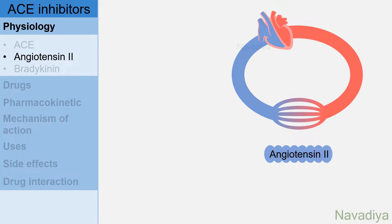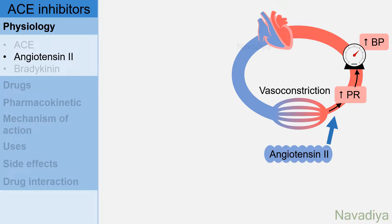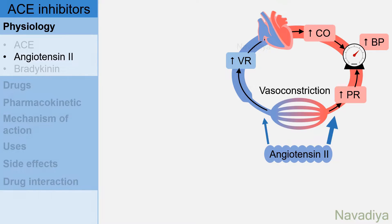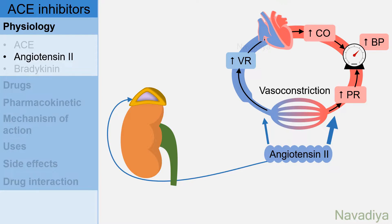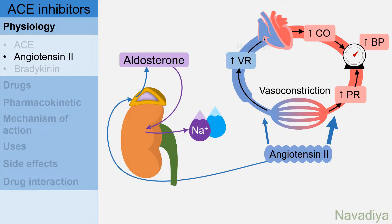Now let's see some effects of angiotensin 2. It mainly causes arteriolar constriction which increases peripheral resistance and thereby increases blood pressure. It also causes venoconstriction to some extent, which increases venous return causing increased cardiac output, which contributes to increasing blood pressure. Apart from this, it also acts on adrenal cortex to increase aldosterone release. Aldosterone acts on kidney and increases sodium and water retention, increasing blood volume and blood pressure. Another effect of aldosterone is increased potassium excretion.